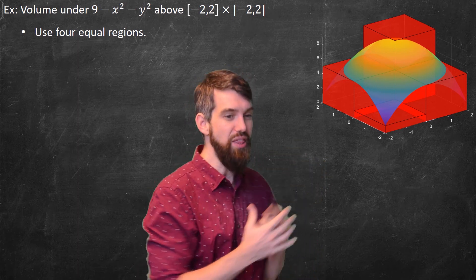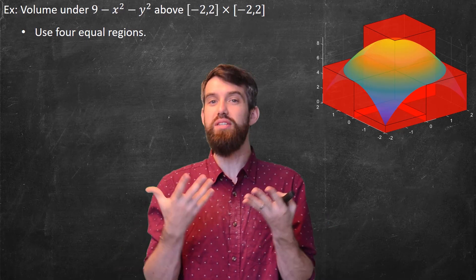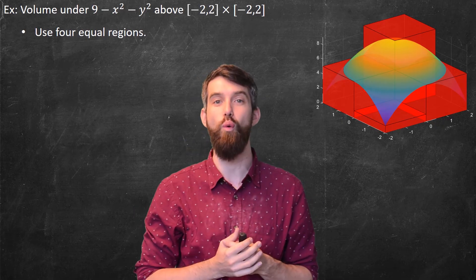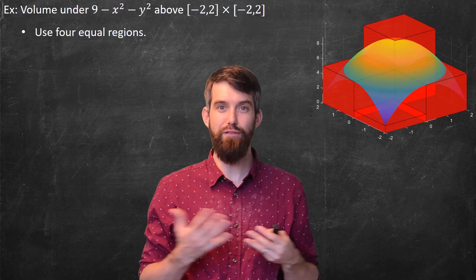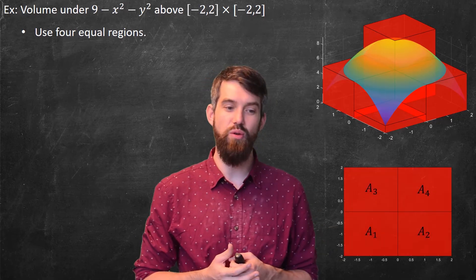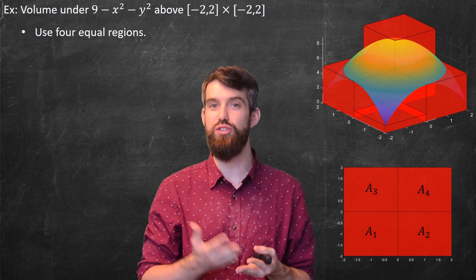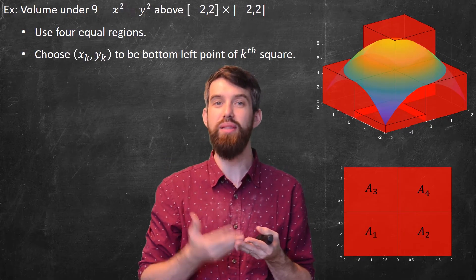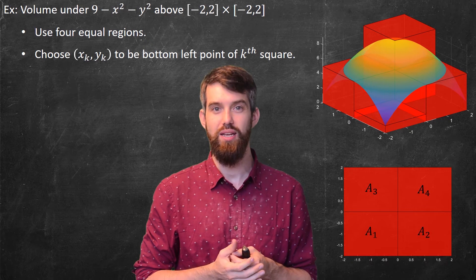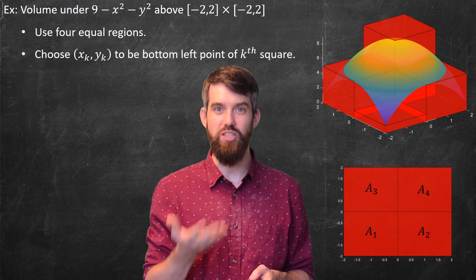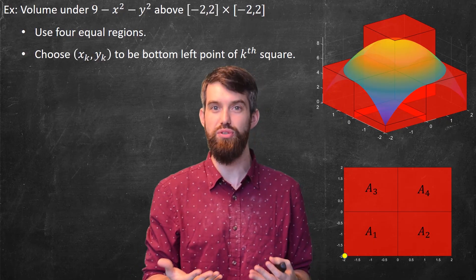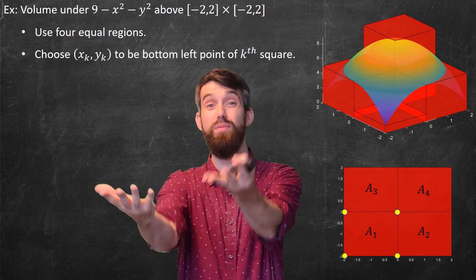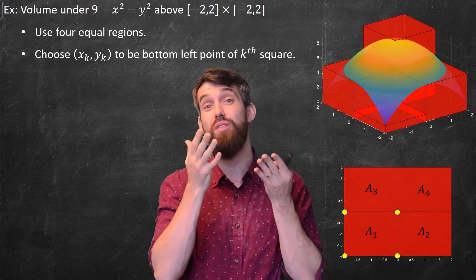As shown in the graphic, there are four different boxes of different heights, and the approximate volume is the sum of their volumes. Focusing on the domain, we have four little rectangles labeled a1, a2, a3, and a4. I'll choose (x_k, y_k) to be the bottom-left corner of each rectangle — so for a1 the point is (-2, -2), and similarly for a2, a3, and a4. I could have chosen any corner, but I'm using the bottom-left for this approximation.